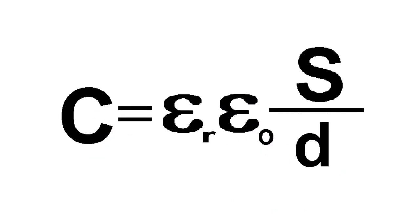In the capacitance formula, epsilon_0 is the electric constant, S is the area of the capacitor plates, and D is the distance between them.